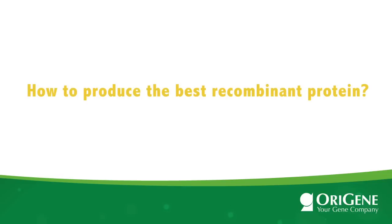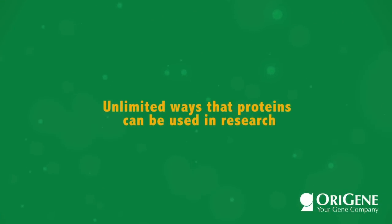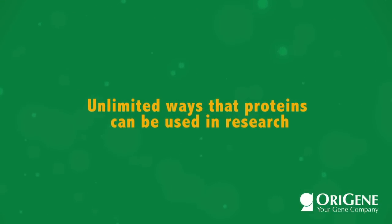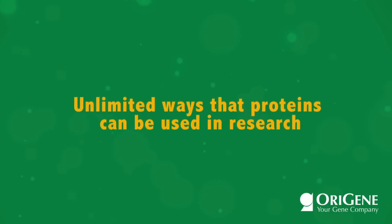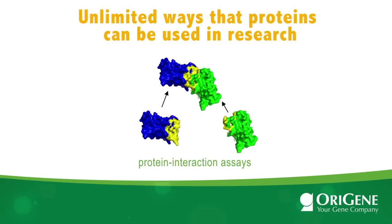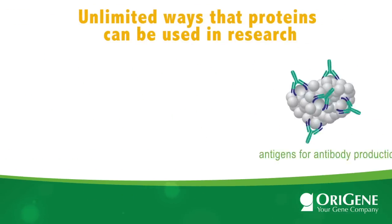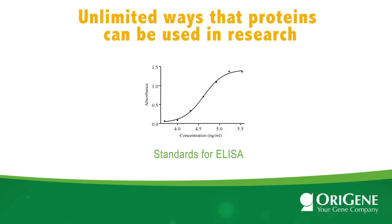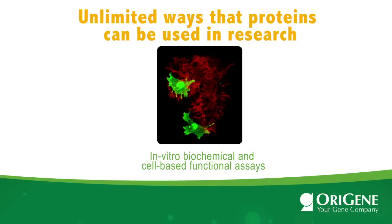How to produce the best recombinant protein — that is the focus of this presentation. There are unlimited ways that proteins can be used in research. They can be used in protein interaction assays or as antigens for antibody production. Human proteins can be used as standards for a variety of assays, including ELISA, in vitro biochemical, and cell-based functional assays.